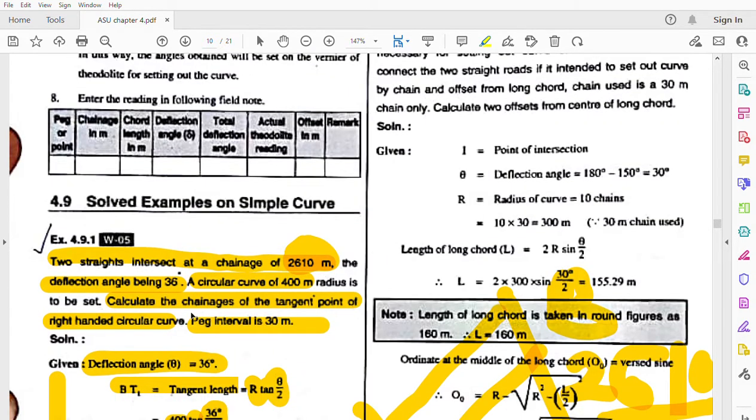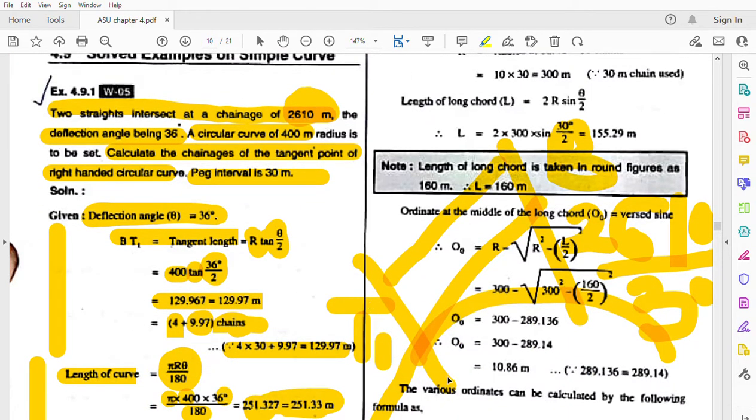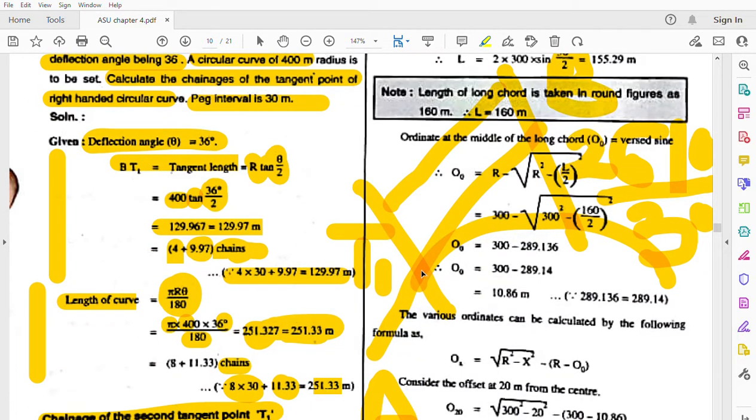Now what do we need to do? Calculate the chainage of the tangent points. Tangent point T1's chainage we found. Now the second tangent point T2's chainage we need to find.